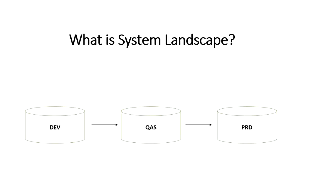The system landscape may vary from organization to organization or company to company. These three are the landscape of any company — literally any company organizes their system in this similar fashion. This system landscape consists of three servers: DEV, QAS, and PRD, which are abbreviations of Development, Quality, and Production respectively.